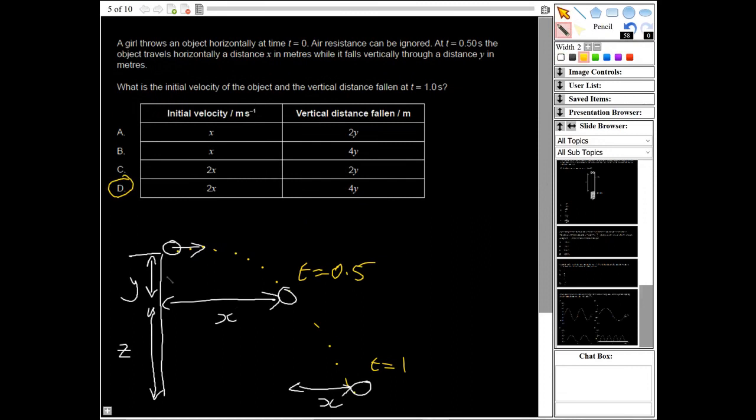So we can assume that the answer there is D. If you actually want to work out how far it's going to travel, you could do s equals ut plus a half a t squared for vertically. And then you would see that you've got a square here and it would end up being 4y. But you can see that because it can't be the same distance here, it's got to accelerate, it's got to have fallen further, so it's definitely going to be D.